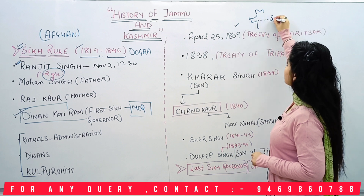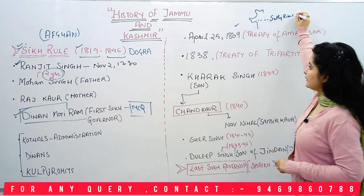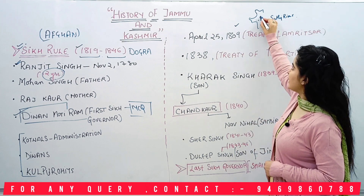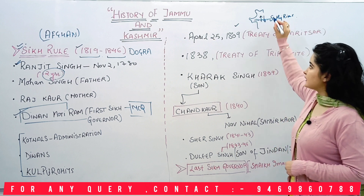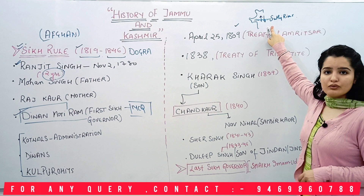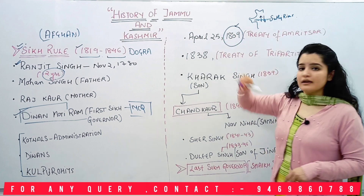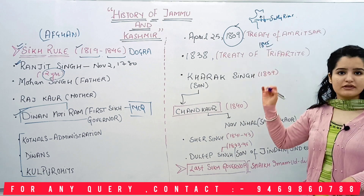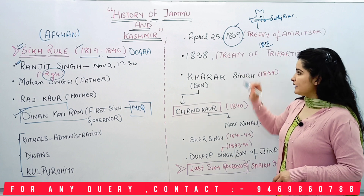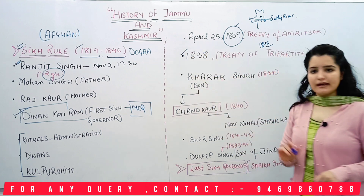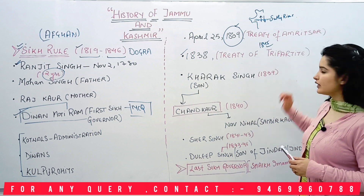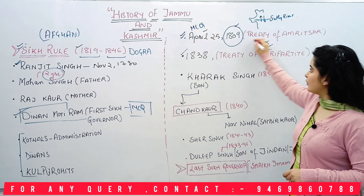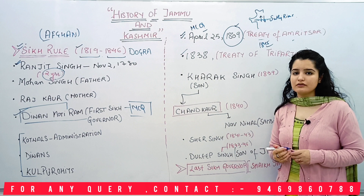In the Treaty of Amritsar, the river Sutlej was established as a barrier. The Britishers agreed they would not invade north of it, and Ranjit Singh would not expand south of it. This treaty was signed in 1809 but eventually failed in 1845. After that, a tripartite treaty was signed in 1838. These are very important MCQs — the Treaty of Amritsar and the tripartite treaty of 1838.